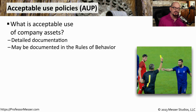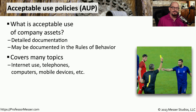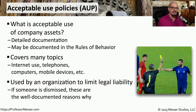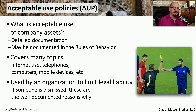The AUP defines what users are able to do with the technology provided to them — what is acceptable for everyone in the organization when using their computers, telephones, mobile devices, and any other type of technology. This documentation not only informs everyone of appropriate use, but it can also protect the organization in the case of legal liability. If someone is dismissed from the organization because they did not follow these policies, you have documentation that helps describe why this particular person is no longer with the organization.